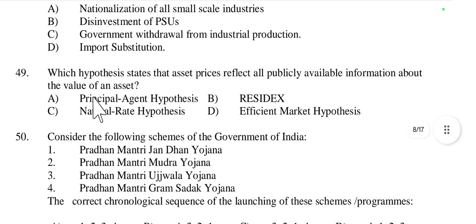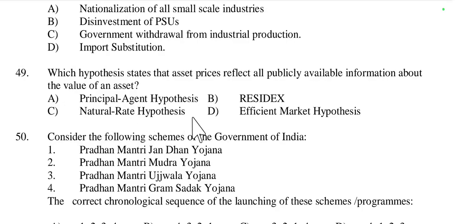Question 49: Which hypothesis states that asset prices reflect all publicly available information about the value of an asset? It is called the Efficient Market Hypothesis. According to this hypothesis, it is impossible to consistently achieve higher returns than average market returns on a risk-adjusted basis because all relevant information is already incorporated into asset prices.